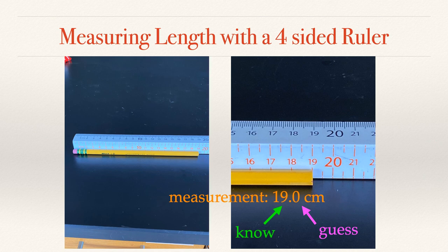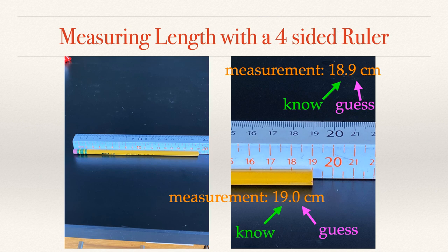Another way of thinking about it, what if you or a classmate thought that it was a little bit short of 19 when you measured it? Well, I would say then it would be 18.9. So again, what we know is that ones place and our estimate is to the tenths place. That's our guess.